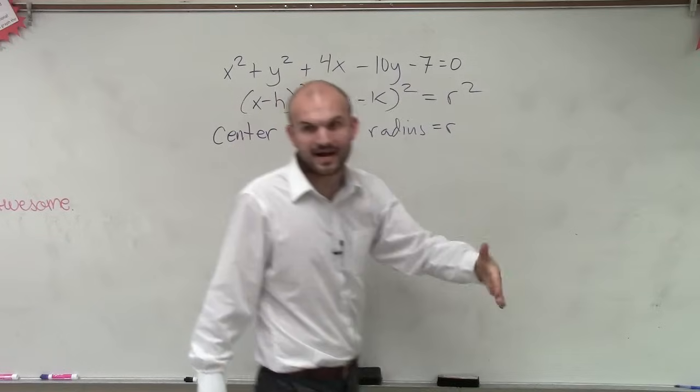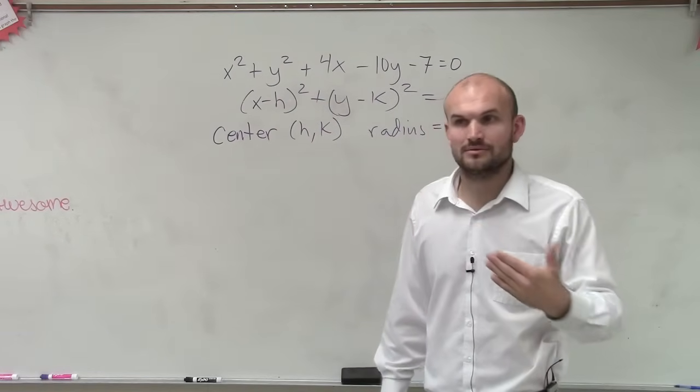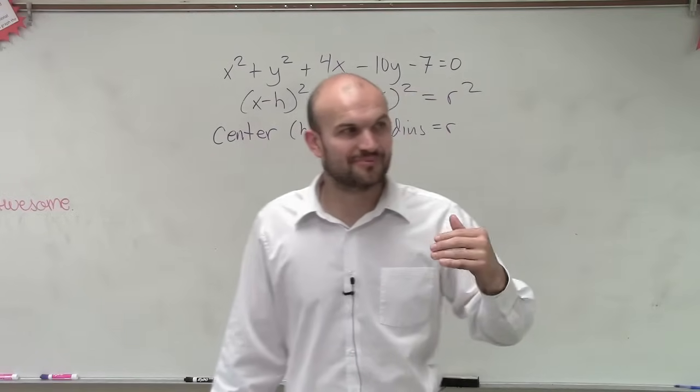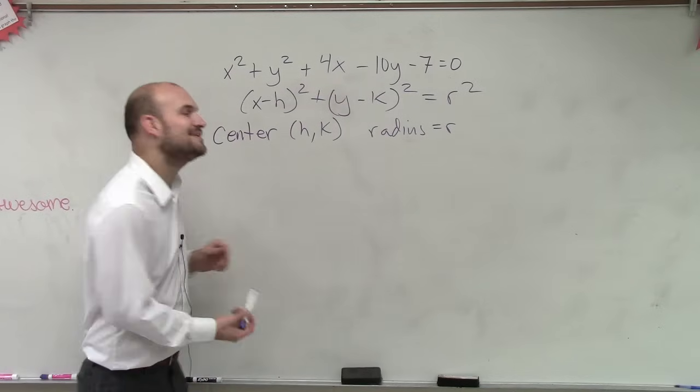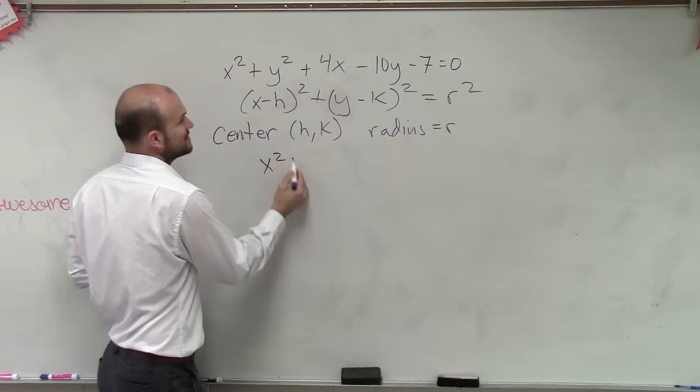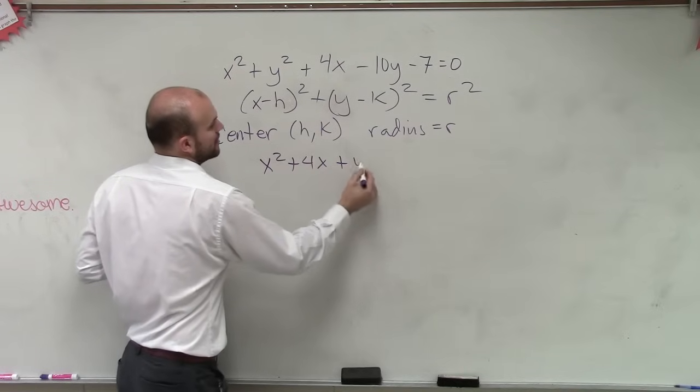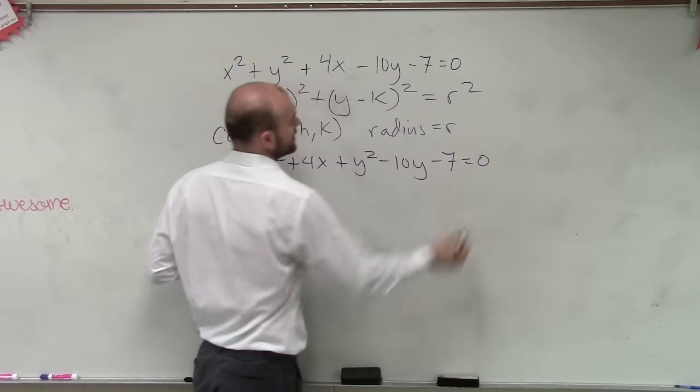And there's a little bit of process that we started off the class with, which we call completing the square. And notice, we're going to have to do it twice. So x squared plus 4x plus y squared minus 10y minus 7 equals 0.